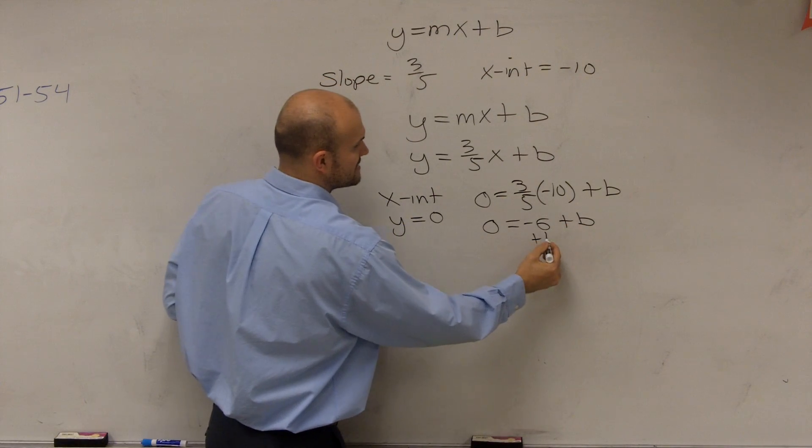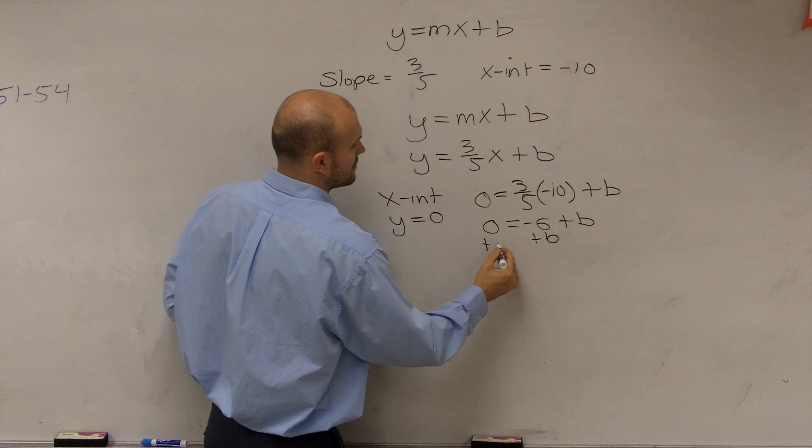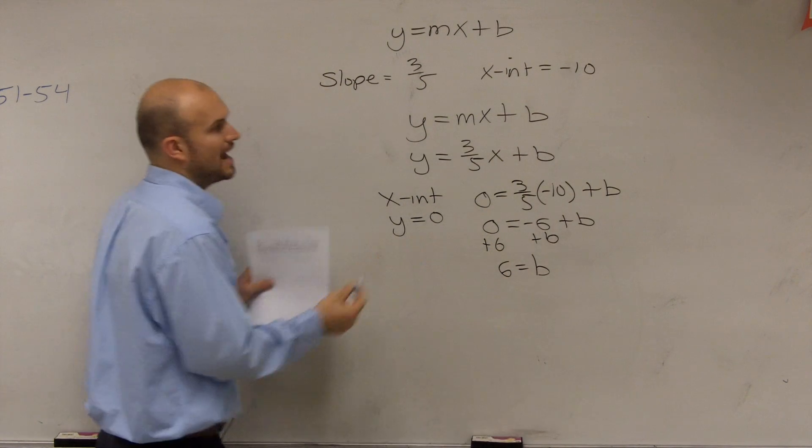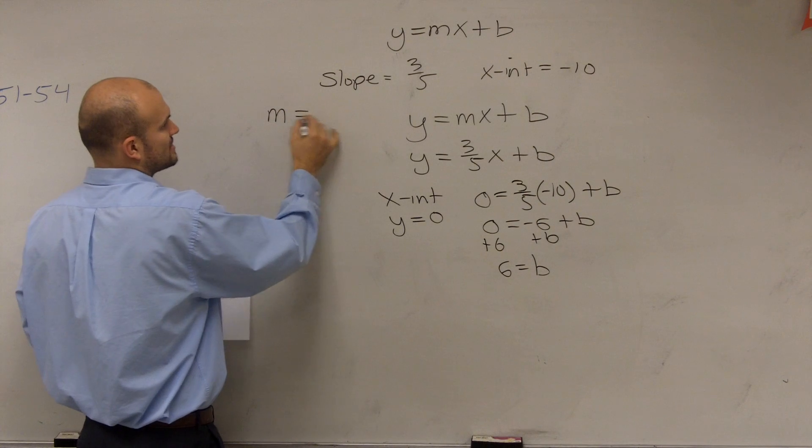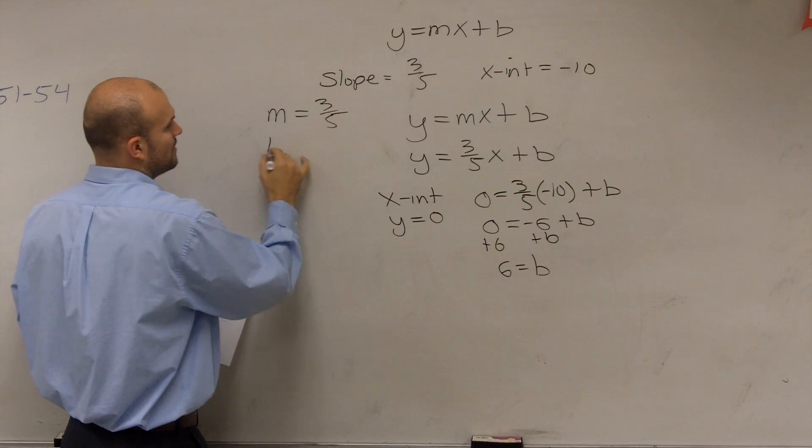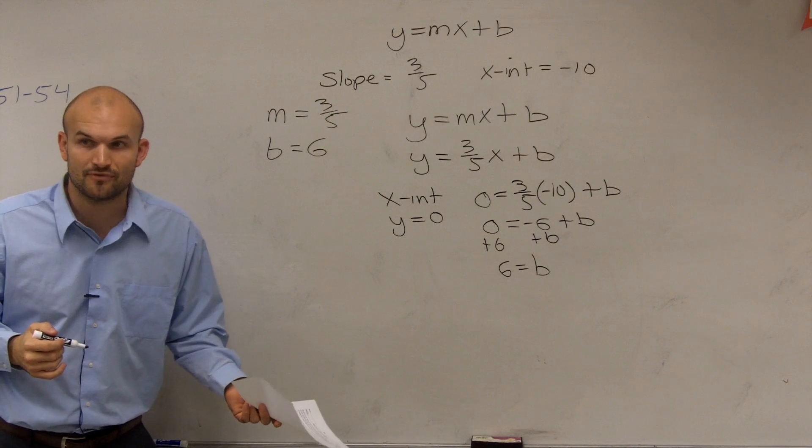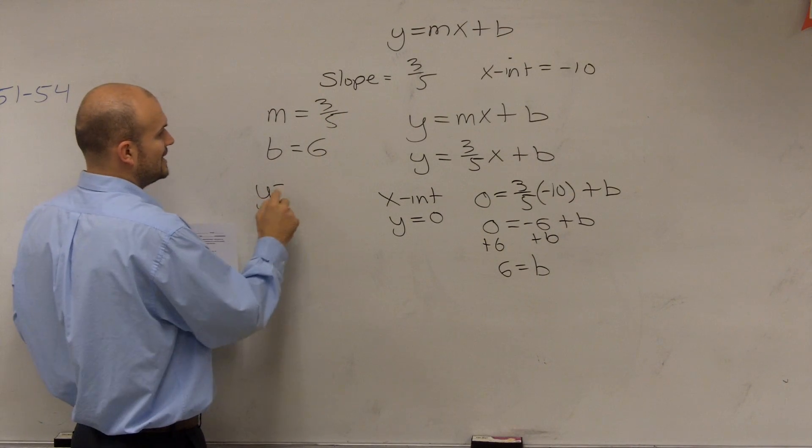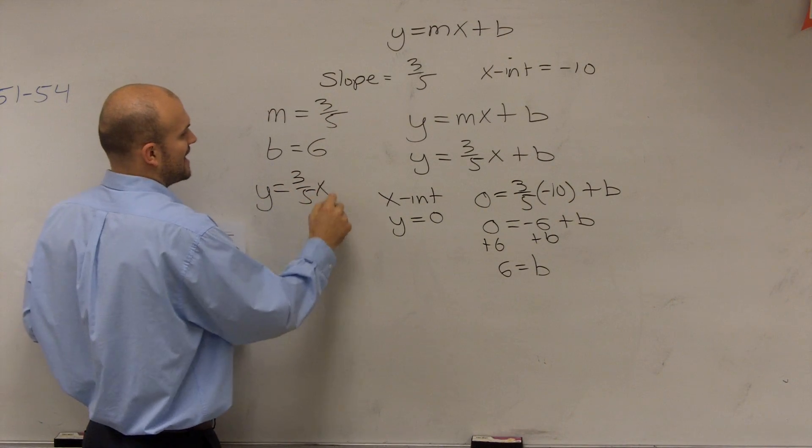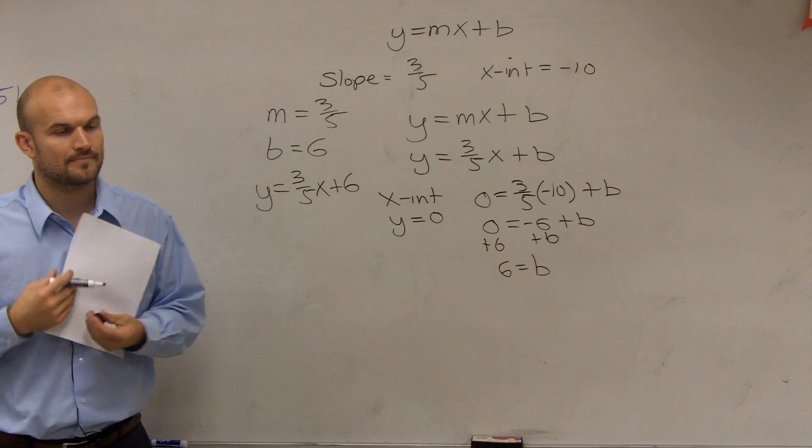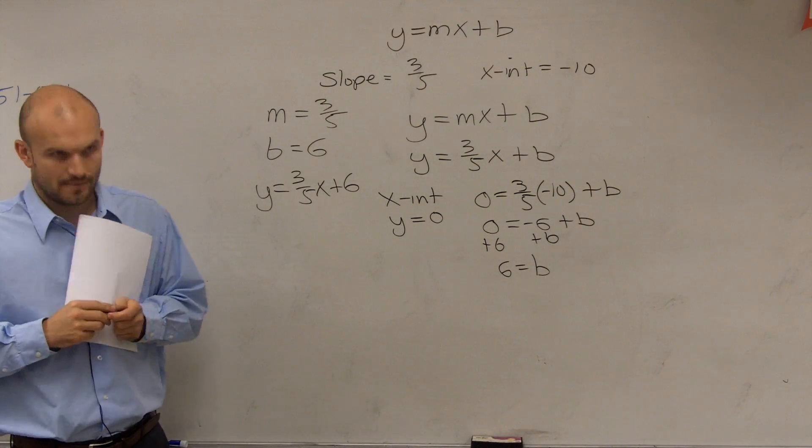So now, you add the 6 to the other side. And you get 6 equals b. So now, let's look at it. Do we know what slope is? Yes. Do we know what b is? Yes. So going back to that 30 second problem we did before, y equals 3 fifths x plus 6.